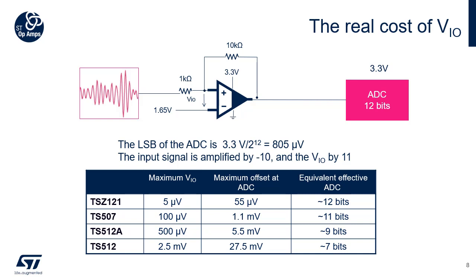We can see that if the OpAmp is not chosen carefully, all the money spent on a 12-bit ADC is lost. In this example, if the TS512 OpAmp is chosen to amplify the signal, only 7 bits of the 12-bit ADC are effective. Whereas by choosing the TSZ121, which has an extremely low VIO of 5 µV, no LSB will be lost when using a 12-bit ADC and the entire resolution can be used. Therefore, it is not necessary to spend money on a precision ADC if the OpAmp is not correctly chosen.